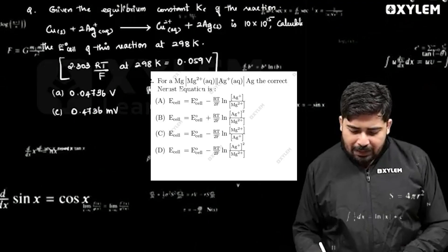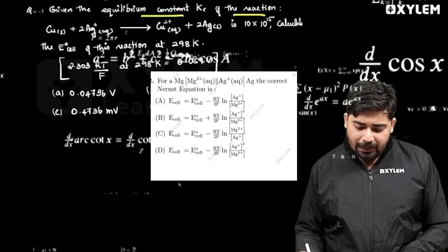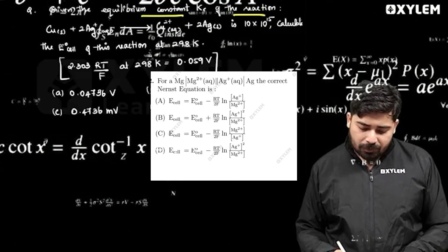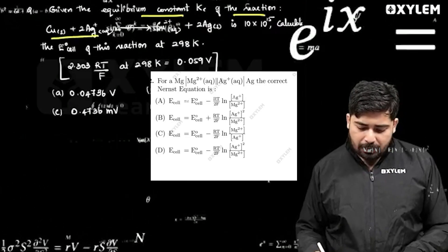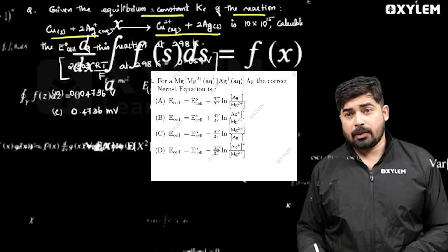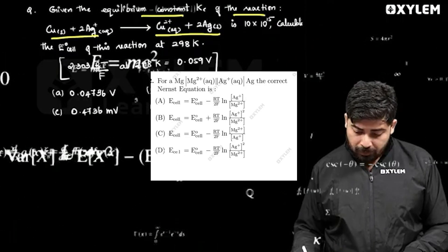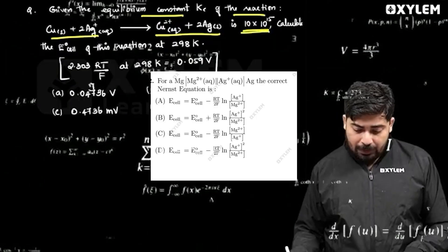Given the equilibrium constant Kc of the reaction: Copper plus 2Ag giving Cu2+ plus 2Ag, is 10 into 10 raised to 15.